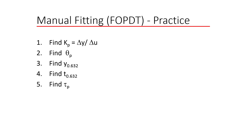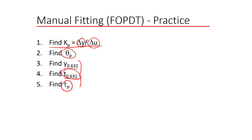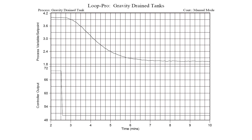To review the procedure for finding first order plus dead time models: first, find k_p as delta_y over delta_u. Next, find theta_p — look for the apparent dead time. Then find tau_p: locate the value at 63.2% of the total change, find the time it reached that, and compute tau_p as the difference between that time and the end of the dead time.